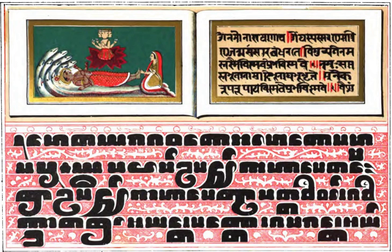The Velthuis scheme was originally developed in 1991 by Franz Velthuis for use with his Devnag Devanagari font, designed for the TeX text typesetting system. This system of representing Pali diacritical marks has been used in some websites and discussion lists. However, as the web itself and email software slowly evolve towards the Unicode encoding standard, this system has become almost unnecessary and obsolete.